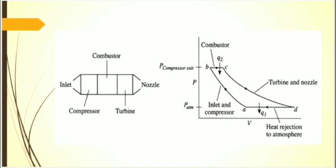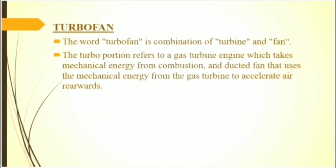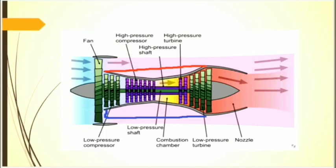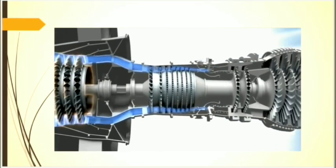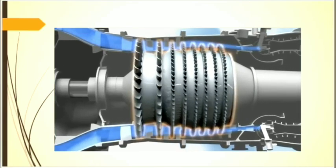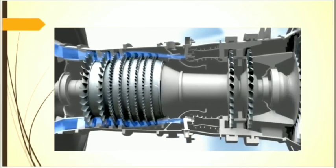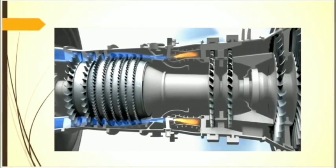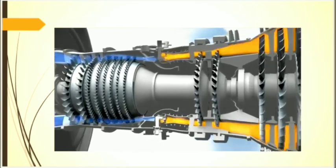D to A represents cooling the air at constant pressure back to its initial condition. The turbofan is a combination of turbine and fan. The turbo portion refers to a gas turbine engine which takes mechanical energy from combustion, and a ducted fan uses that mechanical energy from the gas turbine to accelerate air rearwards.